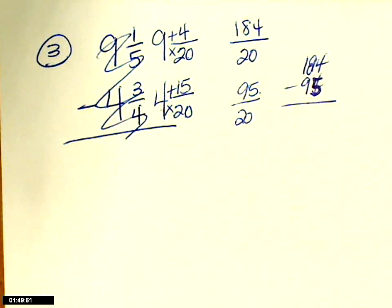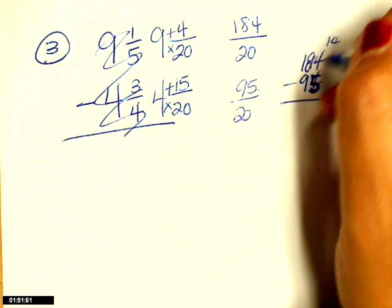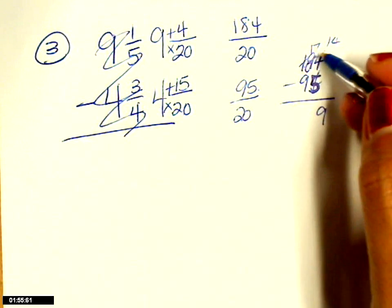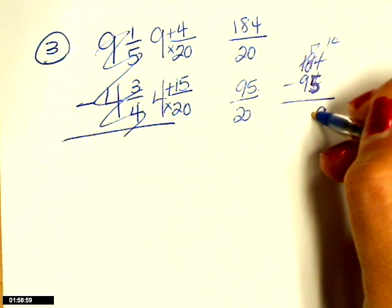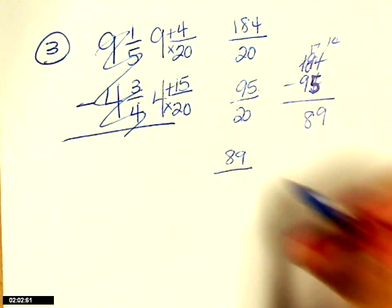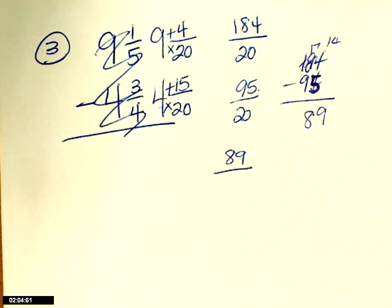Subtracting, what do you get? That's 14, that's a 7, that becomes 17. 14 minus 5 is 9. 17 minus 9? 89 is my numerator and what's my denominator? 20. 20.